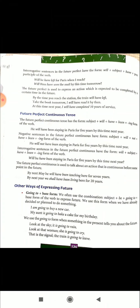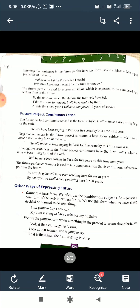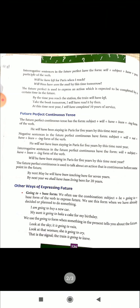Now, Future Perfect Continuous Tense. The Future Perfect Continuous has the form: subject plus will plus have plus been plus the ing form of the verb. For example: 'He will have been staying in Paris for five years by this time next year.' This indicates a continuation of an action over time. The action will be completed in the future but it has been going on continuously — hence 'will have been staying' is used as the continuous tense form.